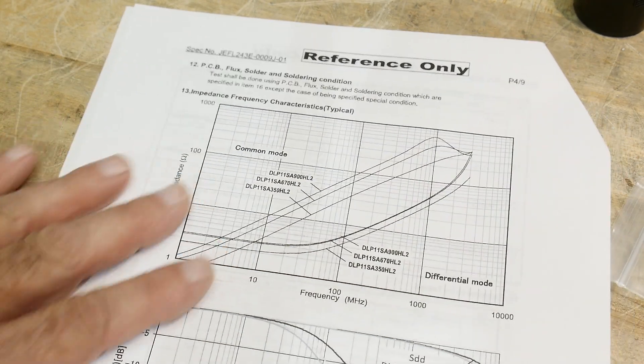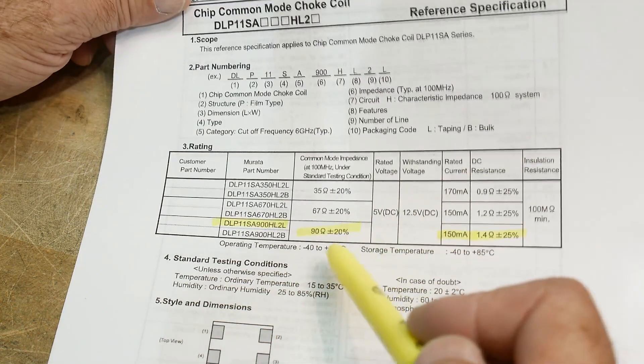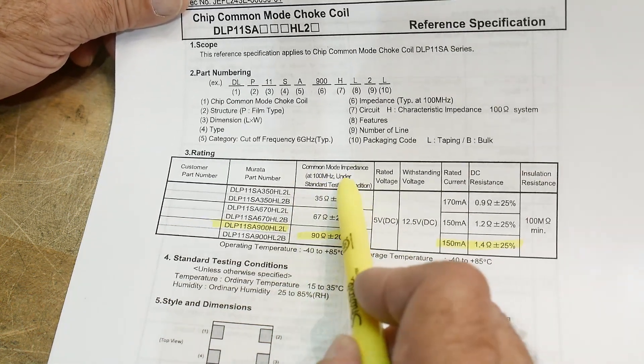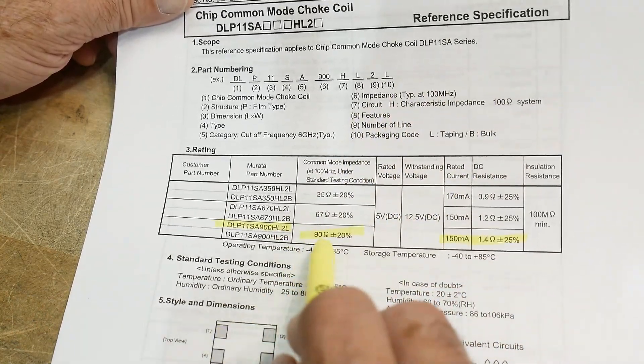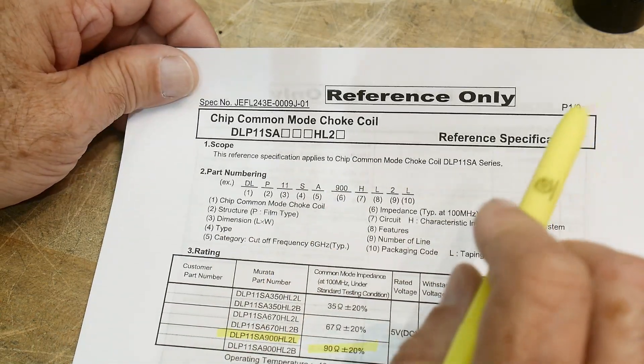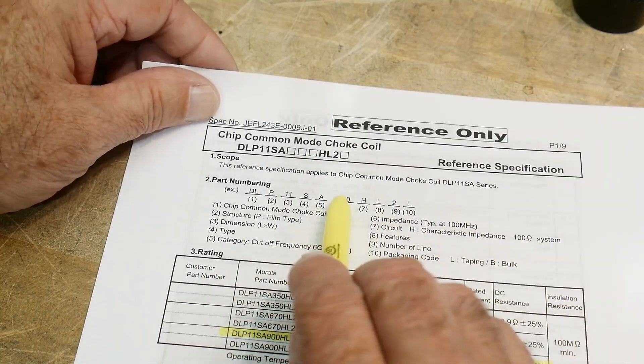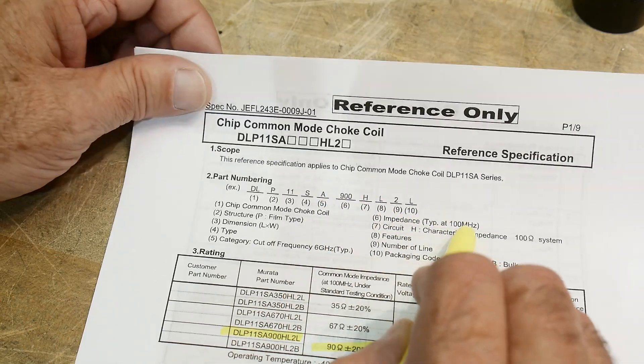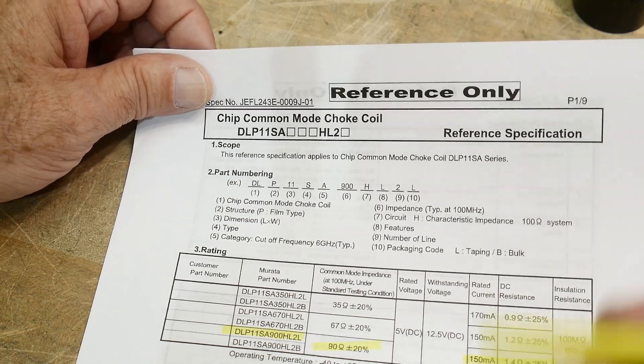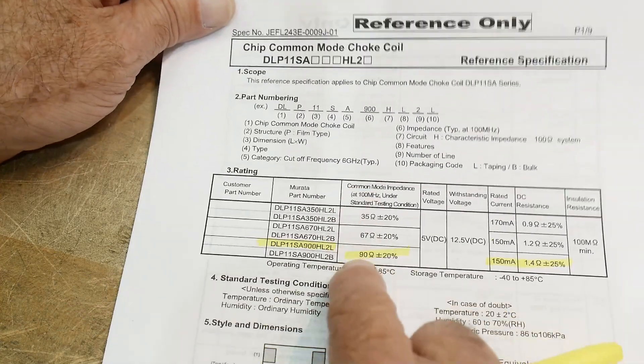So I don't know exactly how they spec these things, because the data sheet tells you one thing, but then the part numbering tells you a different thing. It says here that they tested... Oh, I see. Oh, I'm sorry. They tested it at 100 megahertz. Okay. So they tested it at 100 megahertz, and they get 90 ohms. Even though the part number is 900, which stands for impedance at... Oh, I get it now. Okay. So 900 is actually 90, which is the impedance at 100 megahertz.